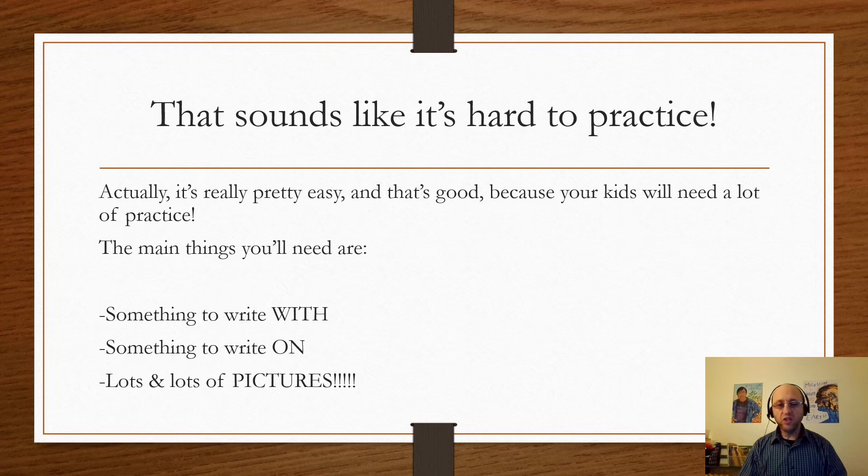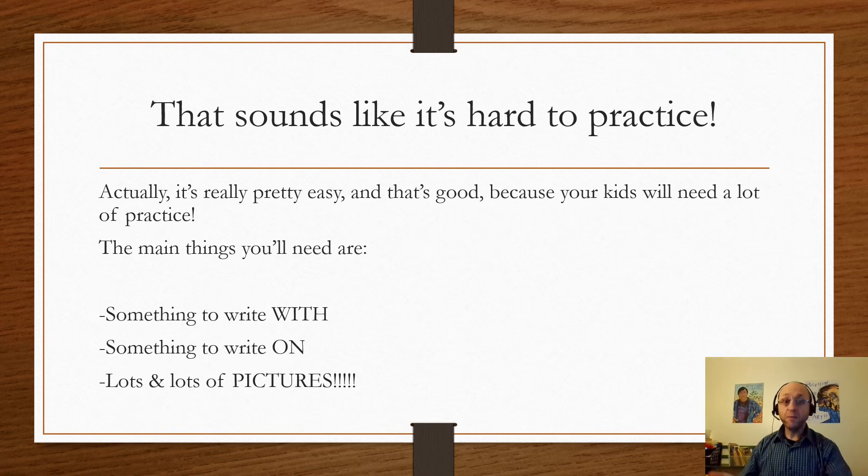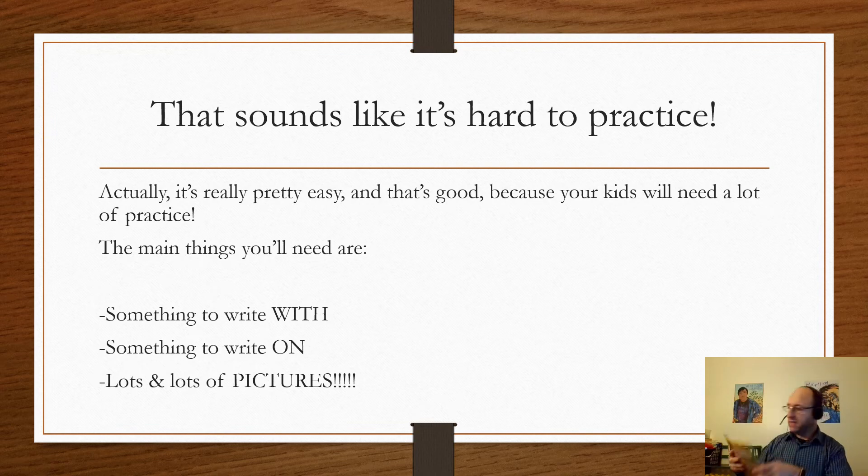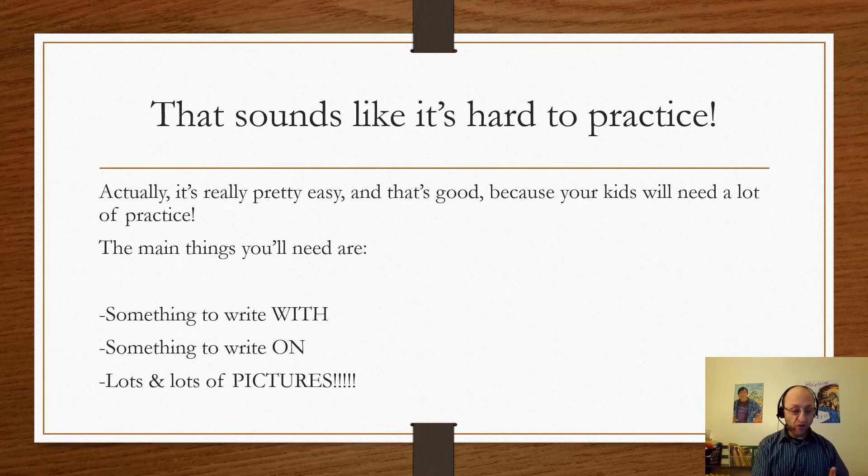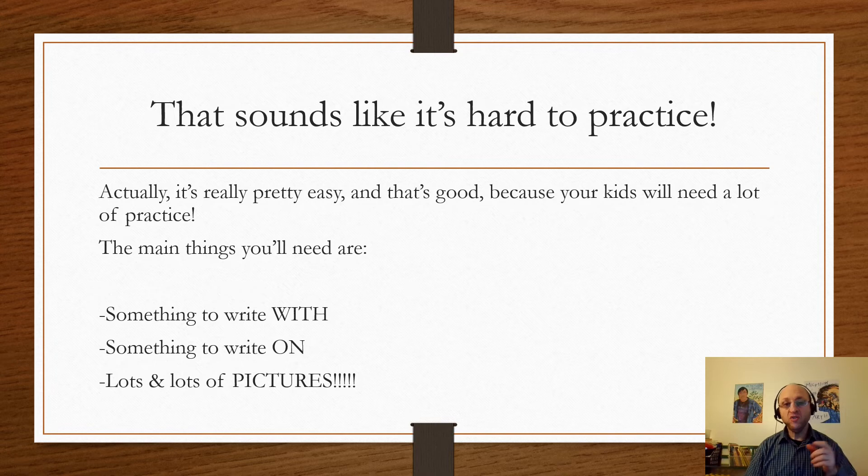But the actual practice is pretty straightforward. What you're gonna do is take out something to write with, something to write on, and get yourself some pictures. They can be pictures from a magazine, pictures on the internet, or pictures from your own phone from your child's life. You take the pictures, look at them together, and make sentences using these conjunctions about the pictures.